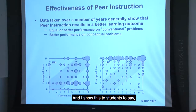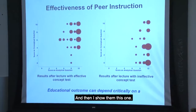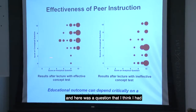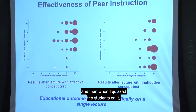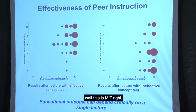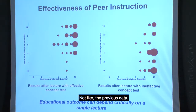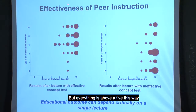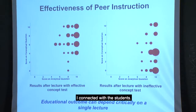I show this to students to say: this is why we're doing it — it works. Then I show them my own data. I didn't do something longitudinal, but I looked at my own data. On one question where I had a pretty good concept question in class and then quizzed the students — well, this is MIT, everyone can solve the equations. Everything's above a 5 analytically, and everything's above a 5 conceptually, which is great — it means on this particular concept, I connected with the students.